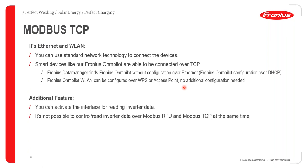The Fronius wireless LAN can be configured over WPS or the access point function. No additional configuration is needed, and you can activate the interface for reading inverter data. Note that it is not possible to control and read inverter data over Modbus RTU and Modbus TCP at the same time — you must select one channel only.